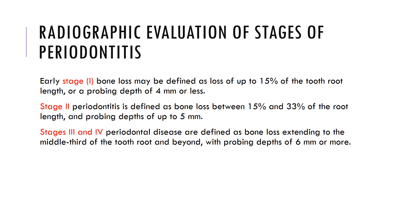In stage 2 periodontitis, the bone loss is between 15 to 33% of the root length and probing depth can be up to 5mm. In stages 3 and 4, periodontal diseases are defined as bone loss extending to the middle third of the root and beyond, and probing depths of 6mm or more.